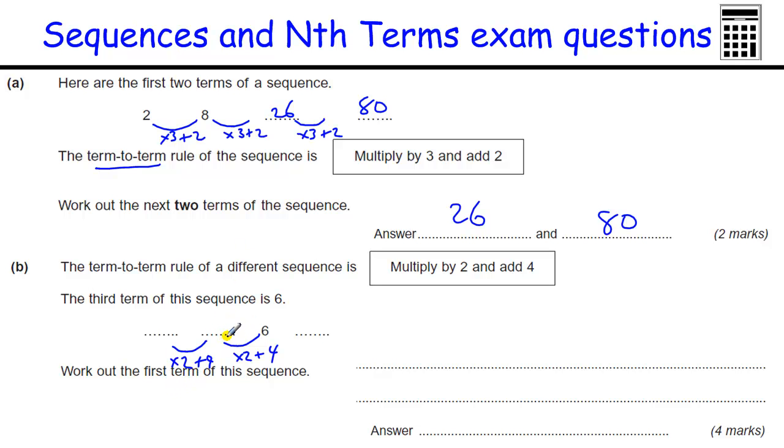So we need to really work backwards. If we're times by two and add four to get to this one, to get back the other way, we need to undo what we've done. So we need to take away four and then to undo times by two, we've got to divide by two. So six take away four is two divided by two is one. And do that again. One take away four is minus three, and minus three divided by two is minus one and a half or 1.5.